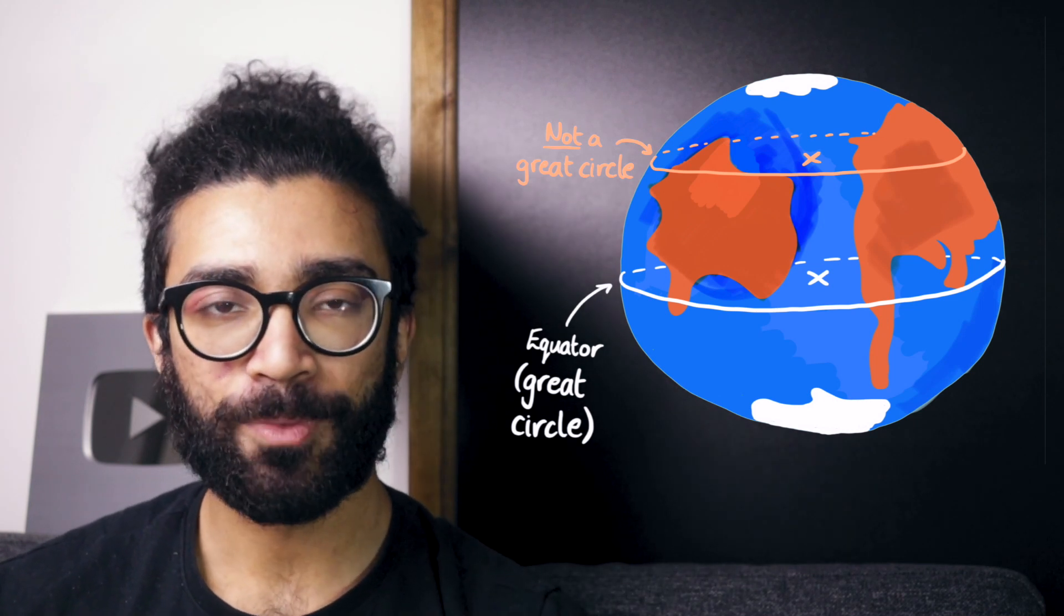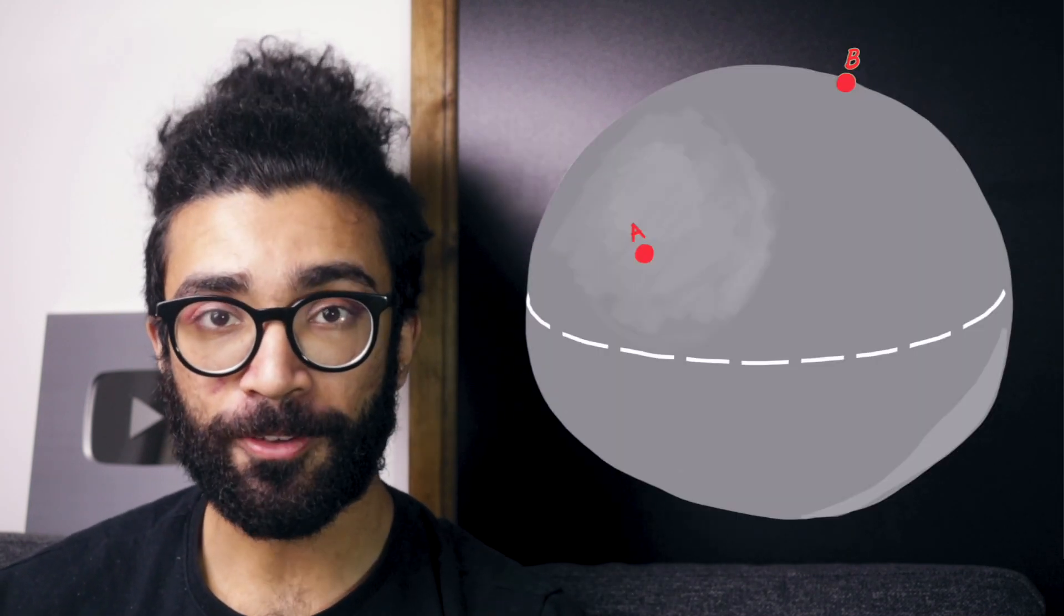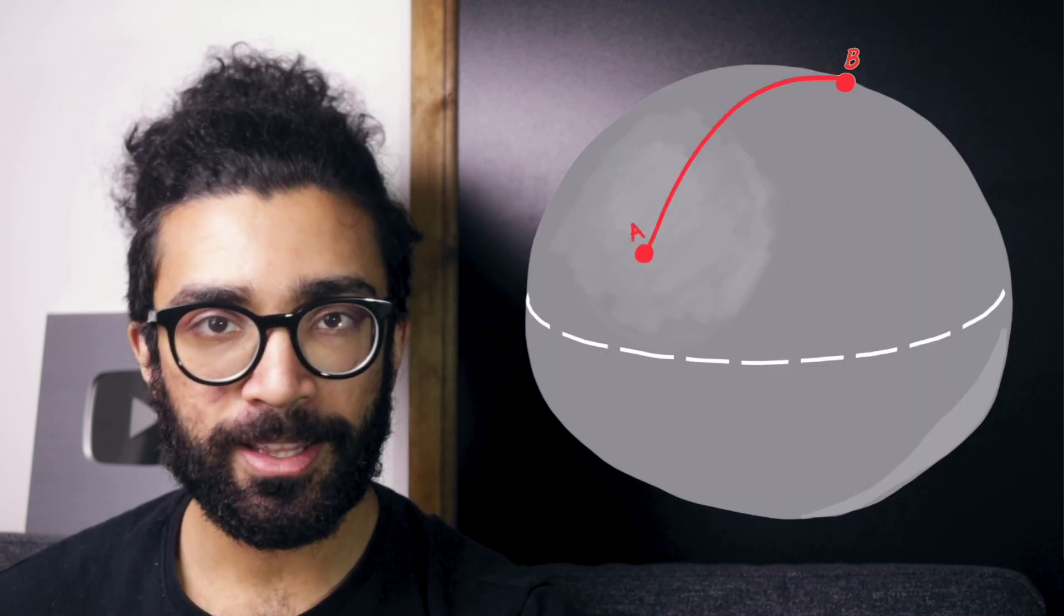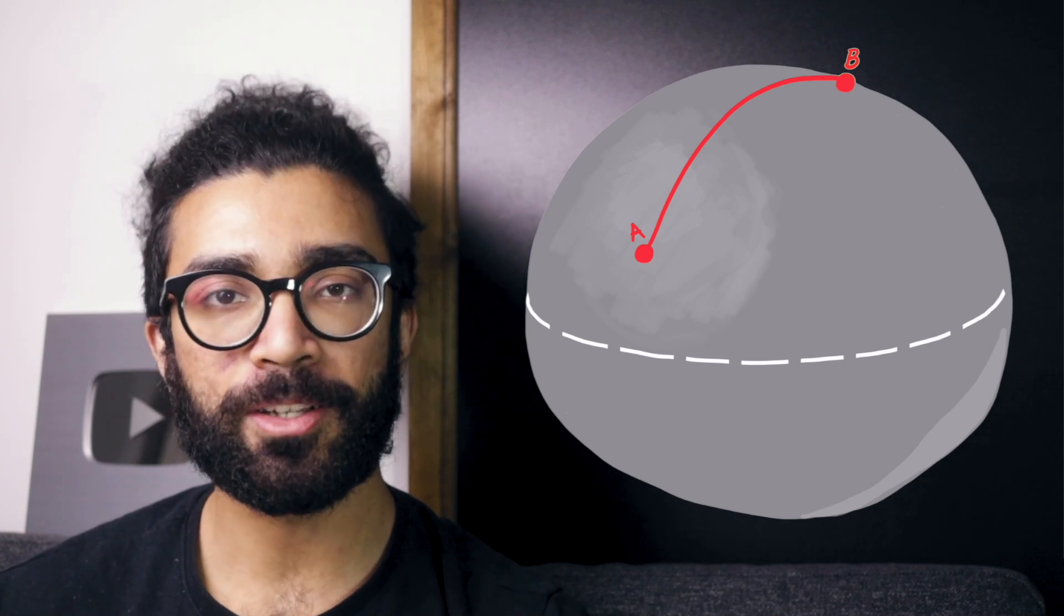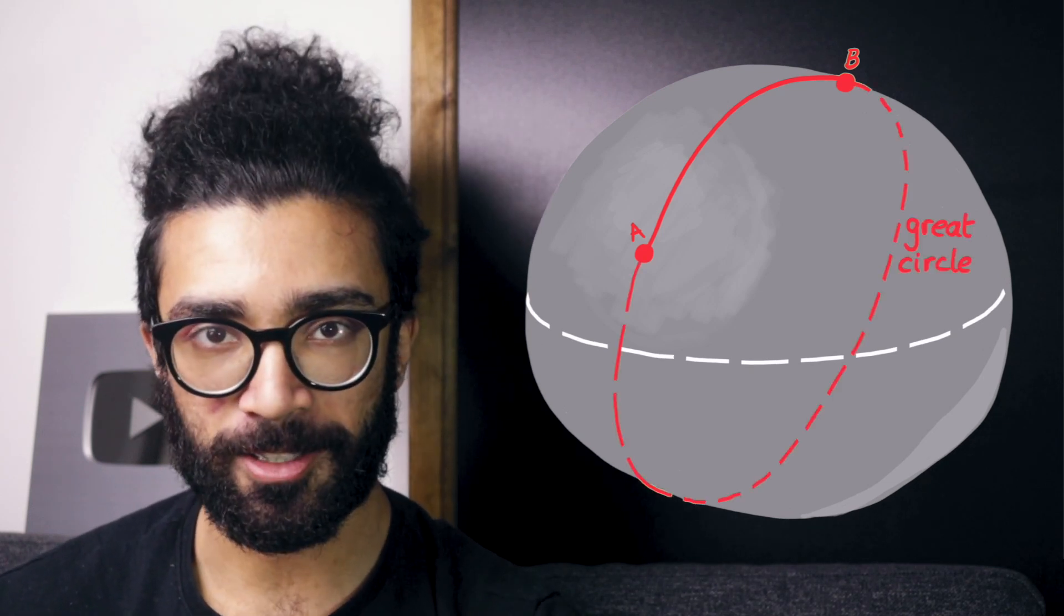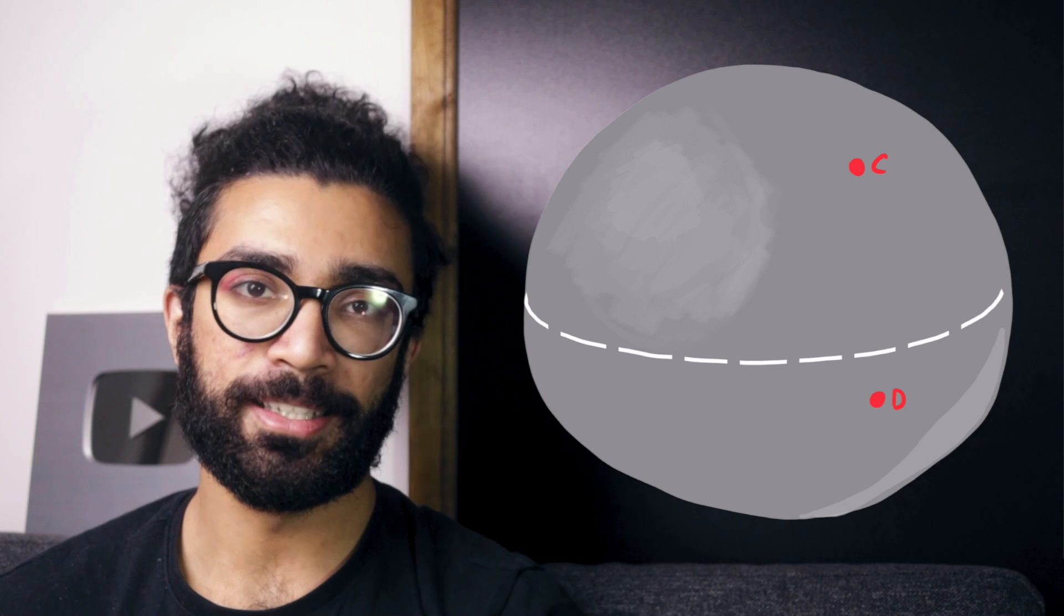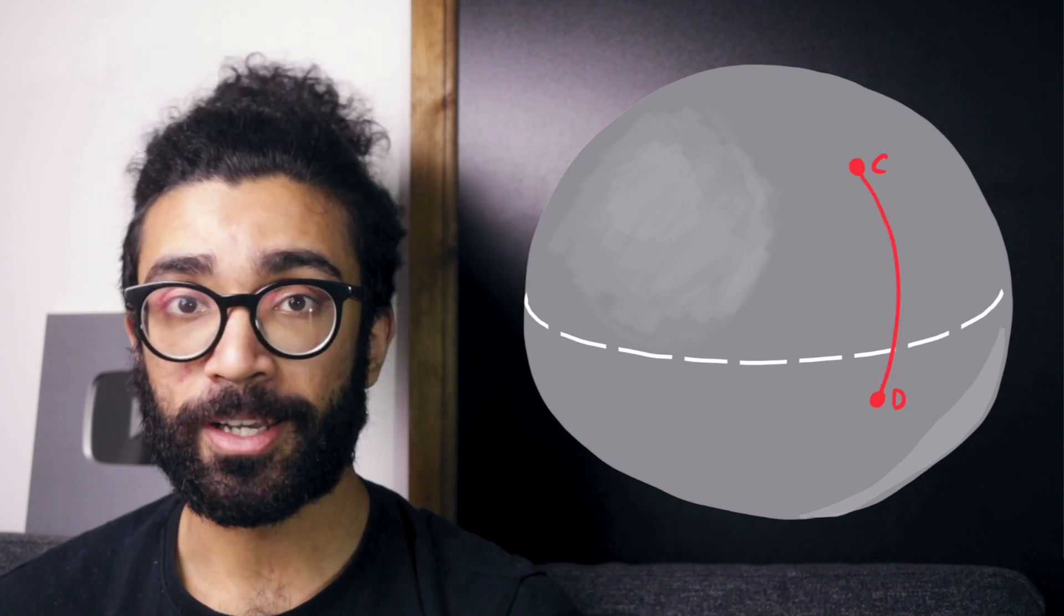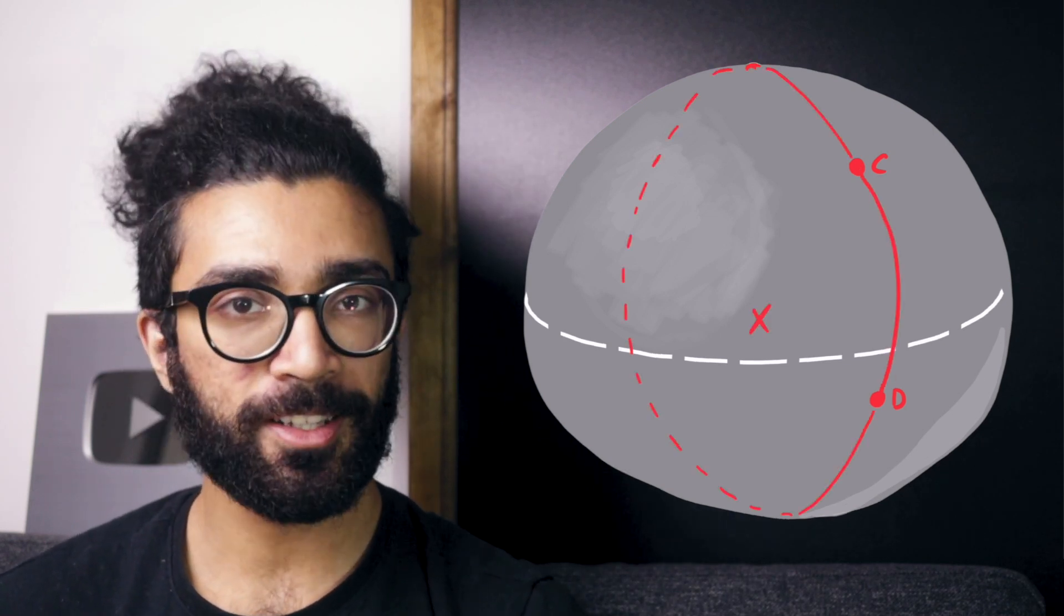So coming back to the point we made earlier, if there are two points on the surface of a sphere, the shortest distance between them along that surface is always going to be a part of a great circle. For example, if we choose another two points, C and D, the shortest distance is this one here, and that is a part of another great circle.